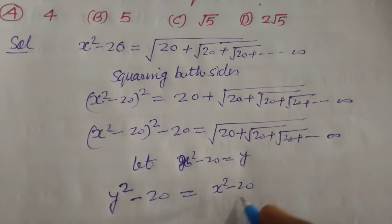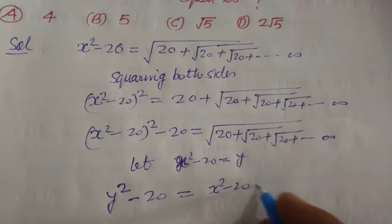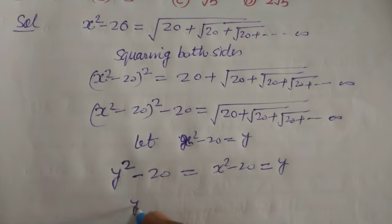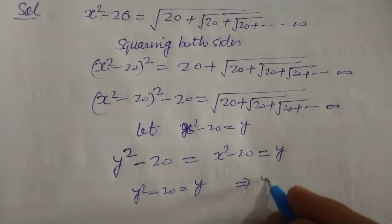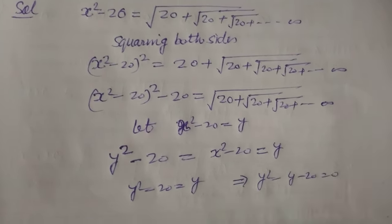So, we put here Y so Y square minus 20 equal to Y and Y square minus Y minus 20 equal to 0.